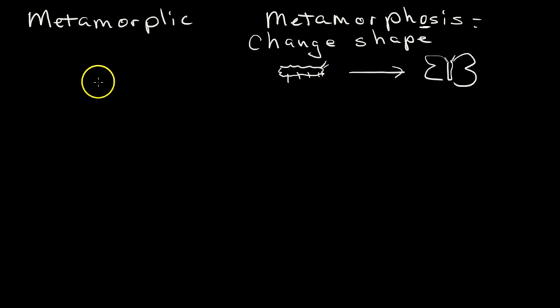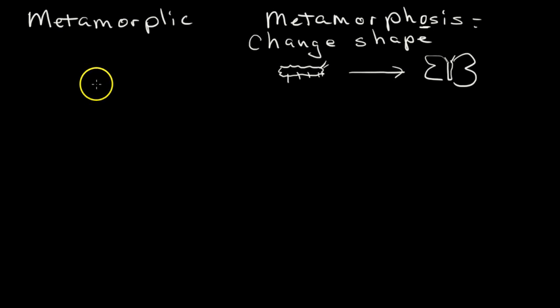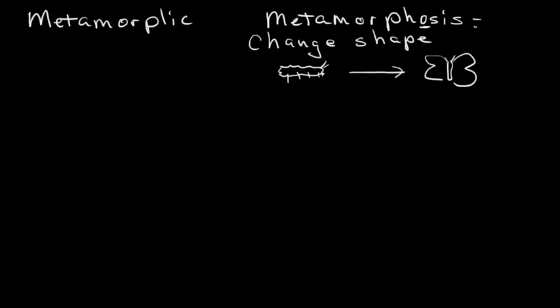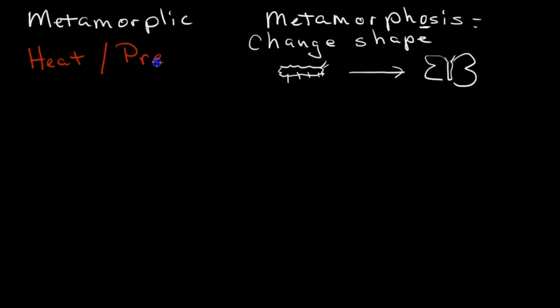In our example of metamorphic rock, a metamorphic rock can start as an igneous rock, can start as a sedimentary rock, or can even start as another metamorphic rock and change into a different metamorphic rock. And the way this happens is through a process of extreme amounts of heat and pressure.